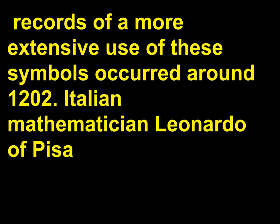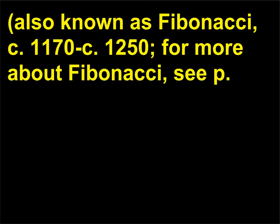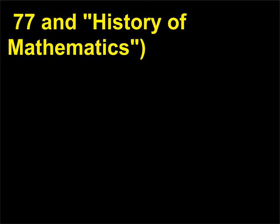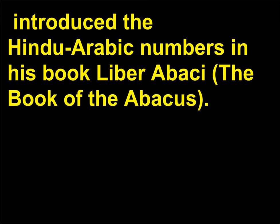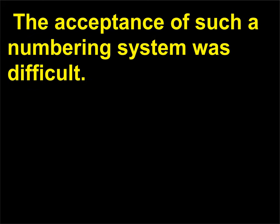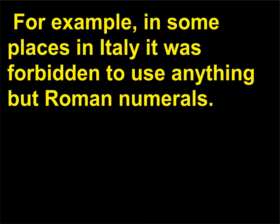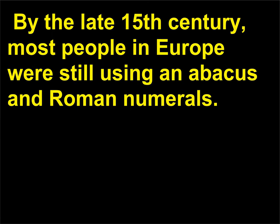Records of a more extensive use of these symbols occurred around 1202, when Italian mathematician Leonardo of Pisa, also known as Fibonacci (c. 1170–c. 1250), introduced the Hindu-Arabic numbers in his book Liber Abaci, the Book of the Abacus. The acceptance of such a numbering system was difficult. For example, in some places in Italy it was forbidden to use anything but Roman numerals. By the late 15th century, most people in Europe were still using an abacus and Roman numerals.